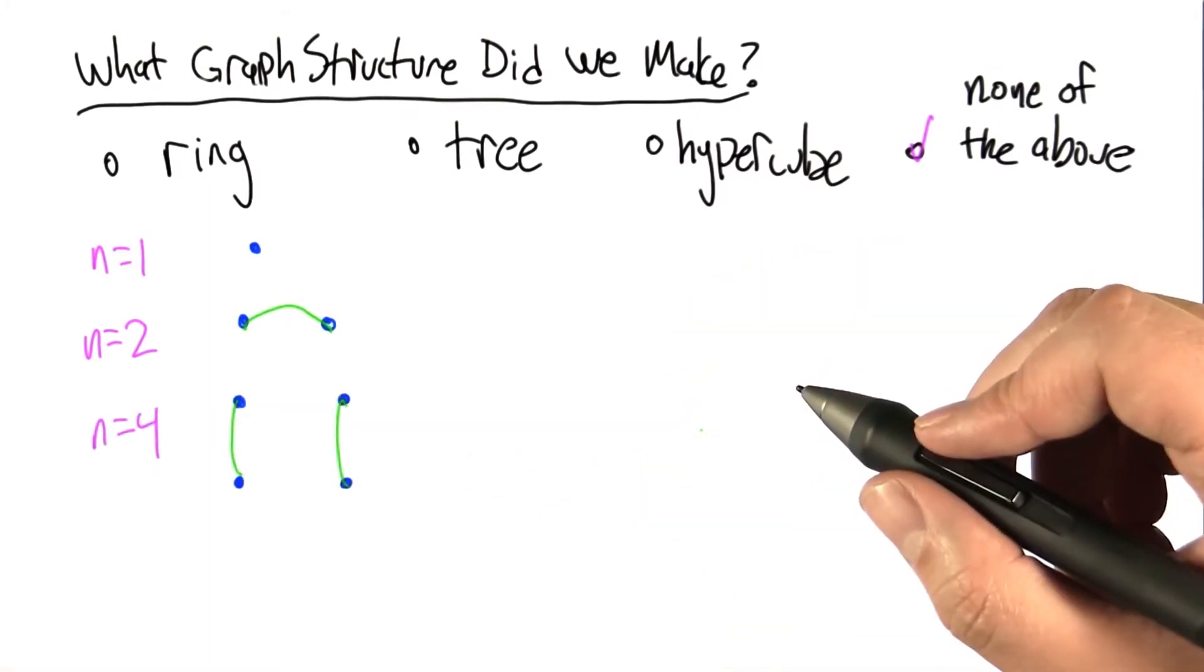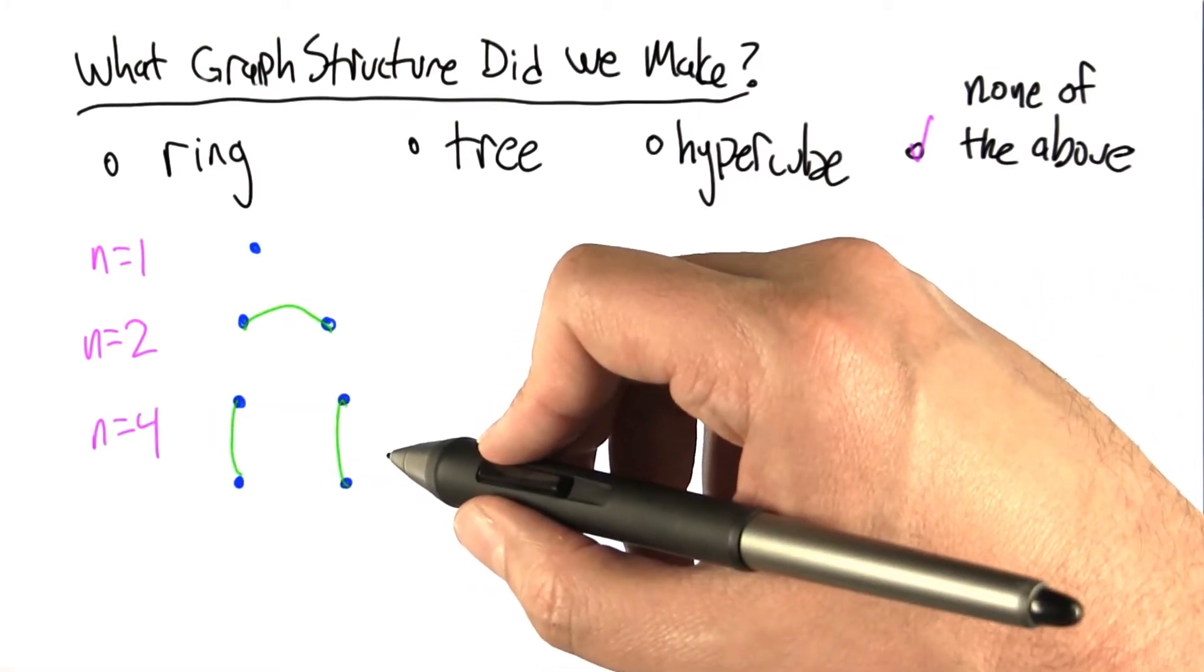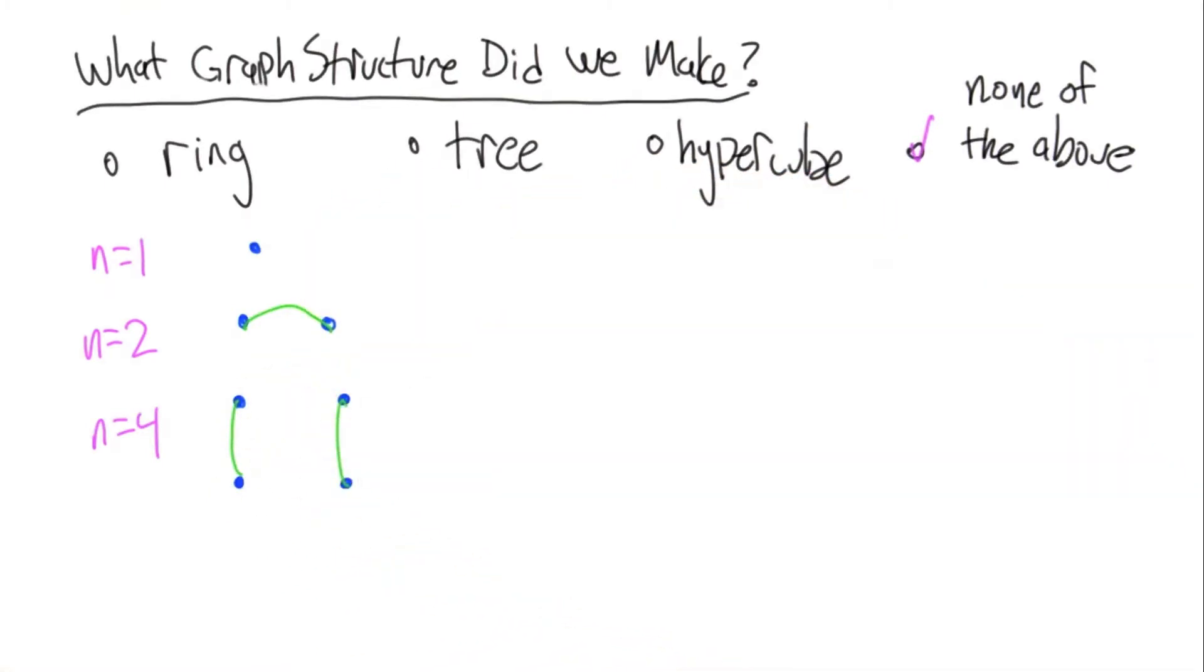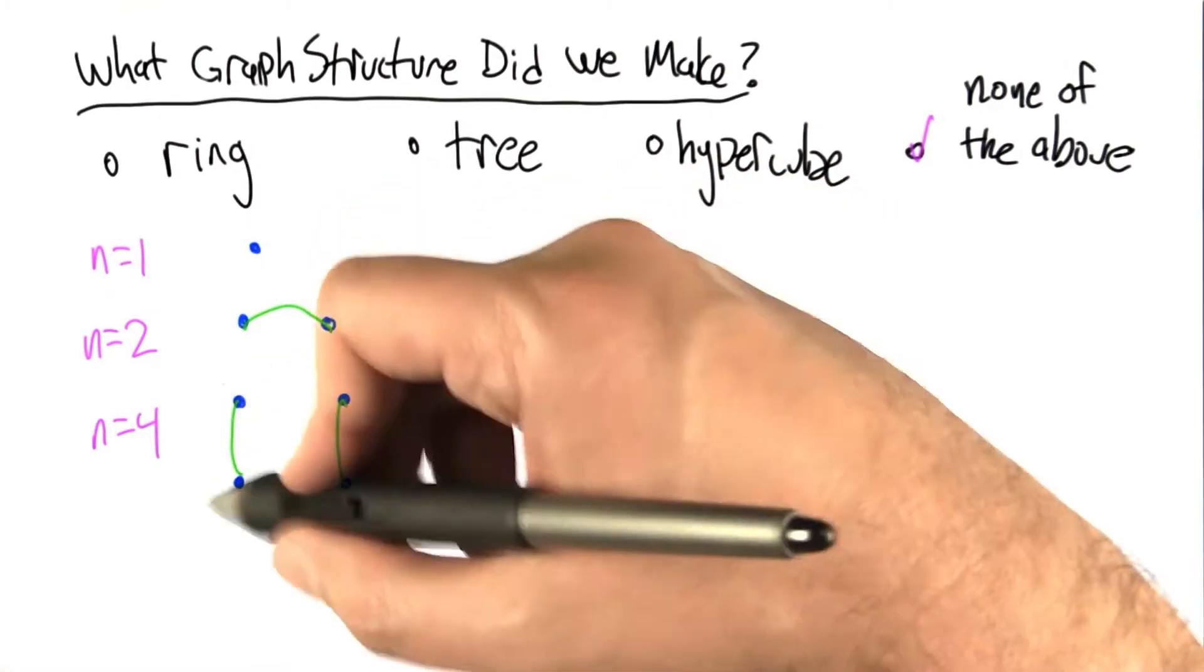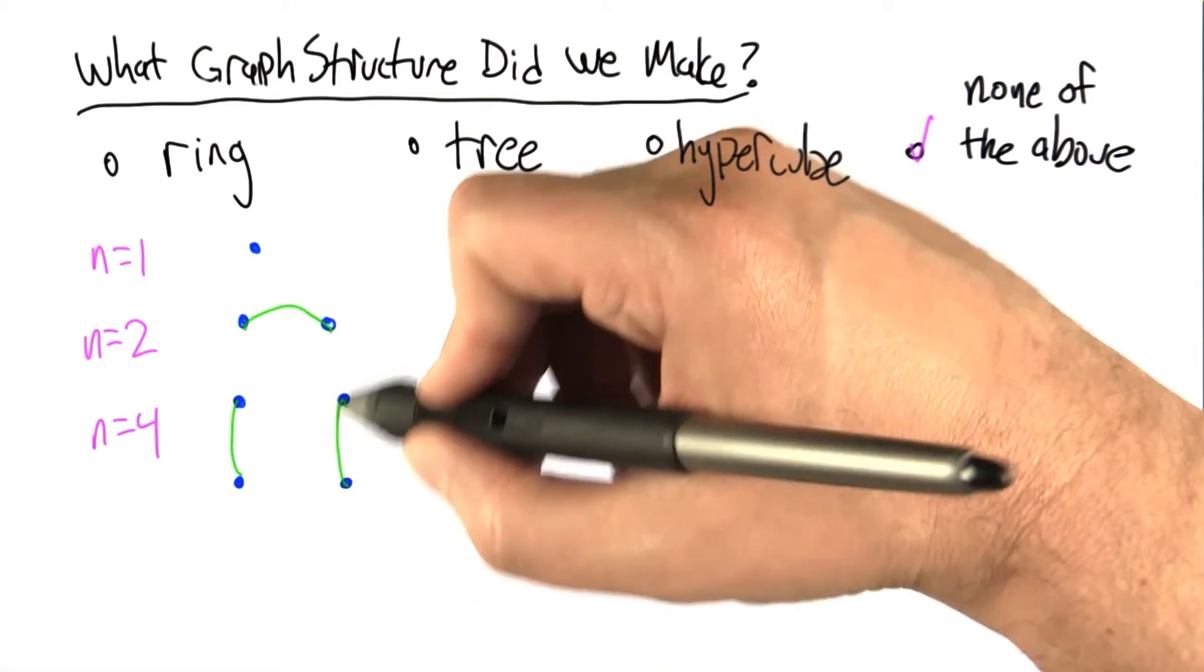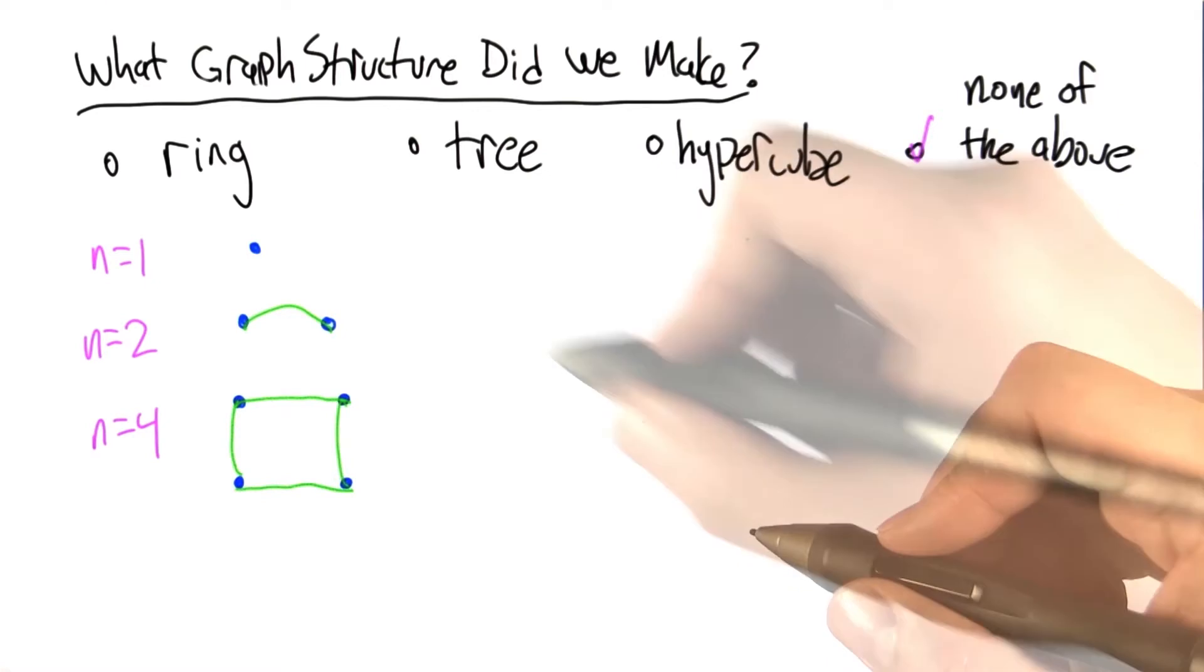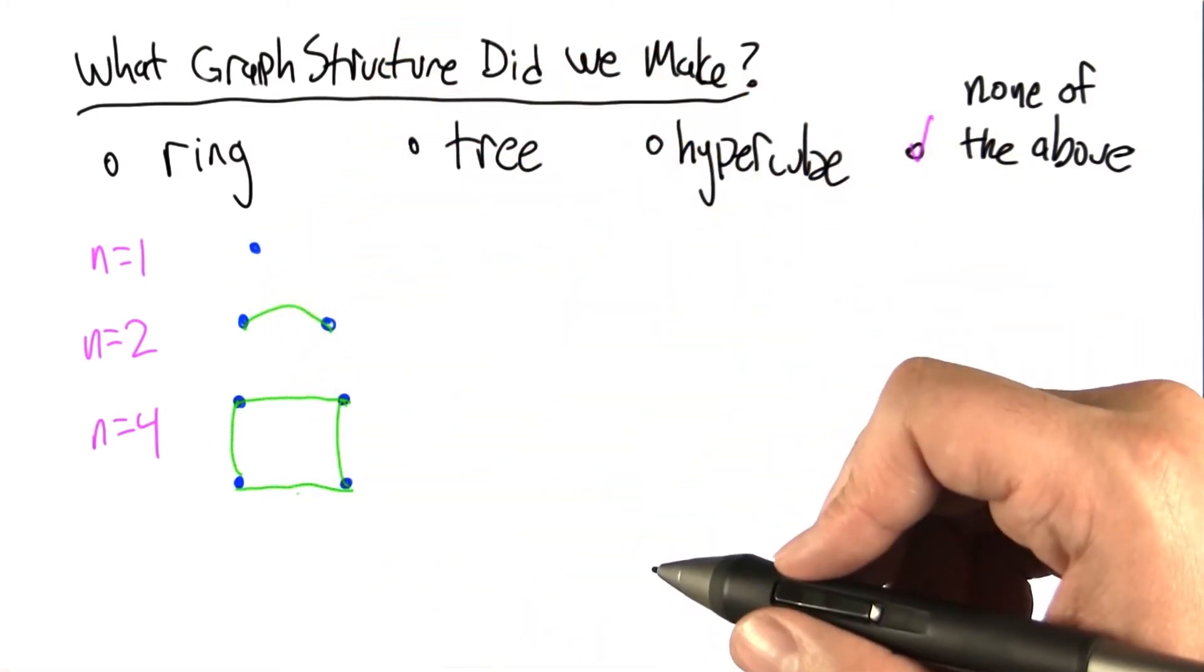In the n equals 4 case, we have two n equals 2 graphs, and then the algorithm arbitrarily orders the two nodes in the two subgraphs, but it looks the same either way. If we flip this around, it still looks the same. Let's pretend I flipped this one around, and then we connect up the corresponding nodes, and now we get something that is a ring. It's also a hypercube. Actually, all these have been hypercubes so far.